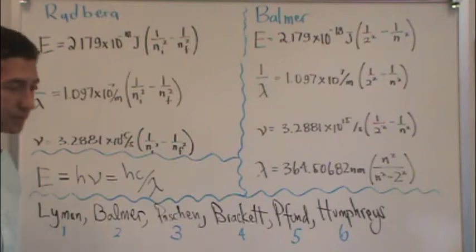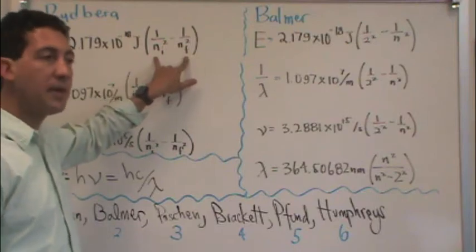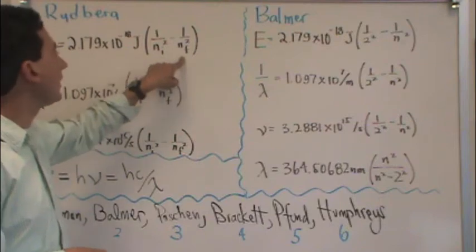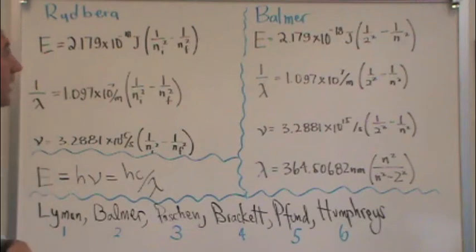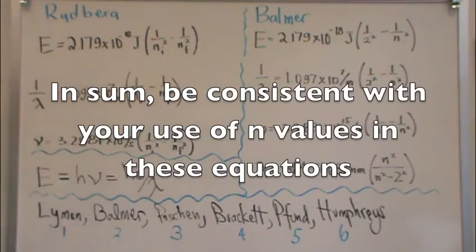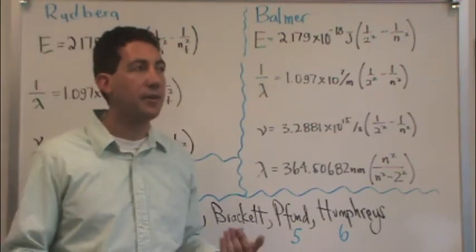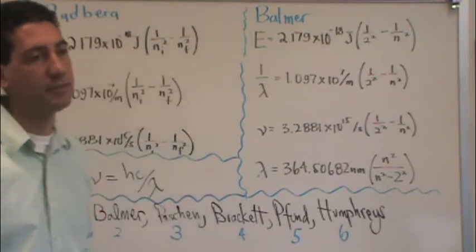However, your textbook or instructor or what have you might not prefer my method, but might be saying the n initial always has to be the smallest number and the n final always has to be the largest number, regardless of where the electron starts or ends. That's totally fine, and what that allows you to do is always keep this quantity positive. If you prefer that, that's not a problem. You're going to end up getting the same value if you take the absolute value of whatever answer you get from either method, really my method, you're going to get the same magnitude of answer.